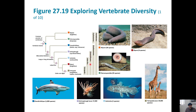The next group we're going to talk about is the Osteichthyes, which are the bony fish — which also includes us, because remember a clade is an ancestor and all of its descendants, and our ancestor was most definitely in that clade.